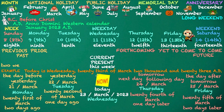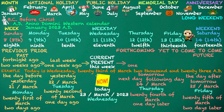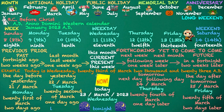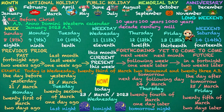This week. Two weeks ago — fortnight ago. One week ago — last week. One week later — following week, next week. Two weeks later — in a fortnight. This month. Last month. Next month. Tonight. Last night. Tomorrow night. 10 years — decade. 100 years — century. 1,000 years — millennium.